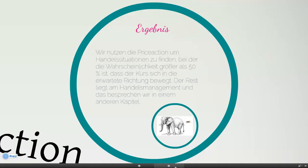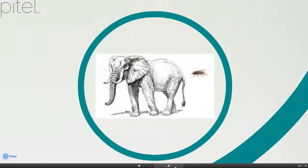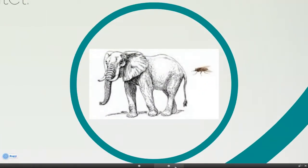Wir suchen Handelswahrscheinlichkeiten, die größer als 50% sind, dass sich der Kurs in die erwartete Richtung bewegt. Das können wir auf jeder Zeiteinheit machen. Marco und ich sind Daytrader – wir handeln auf ganz kleinen Zeiteinheiten, täglich mit 10 bis 20, manchmal sogar mehr Signalen. Man kann das auch auf Tages-, Wochen- oder Monatsbasis machen, ganz so wie es in den persönlichen Rahmen reinpasst. Und eins sollten Sie wissen: wir kleinen Trader sind die Fliegen am Hintern eines Elefanten.